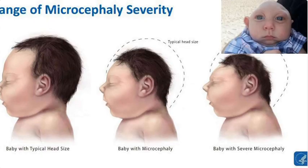Zika virus is primarily transmitted through the bite of infected Aedes mosquitoes, which are also responsible for transmitting dengue and chikungunya viruses. The virus can also be transmitted through sexual contact or from mother to fetus during pregnancy, potentially causing severe birth defects such as microcephaly.